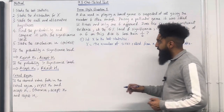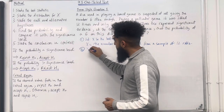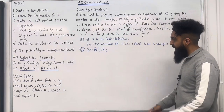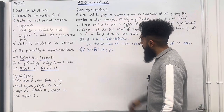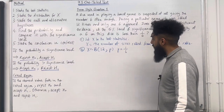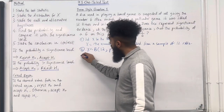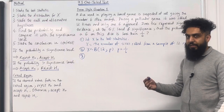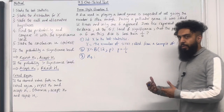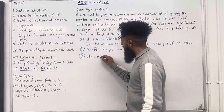Moving on to step 2: state the distribution for X. We know that X takes on a binomial distribution. We have 12 trials because we rolled the dice 12 times, and we have a fixed probability P. The probability P of rolling a 6, we are assuming it to be 1 over 6.